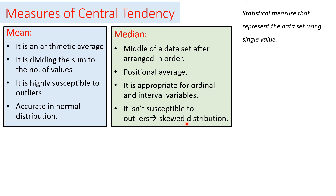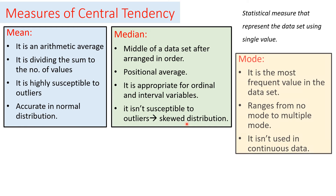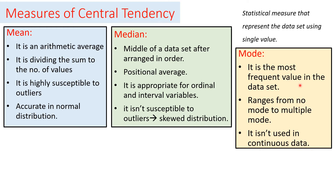The median is suitable for either positively or negatively skewed distributions because it is not affected by extreme values. The mode is the most frequent or most repeated value in the data set. It ranges from having no mode — when there are no repeated values — to having multiple modes when values are equally repeated. The mode is not used with continuous data because each value is typically unique, leaving no mode.